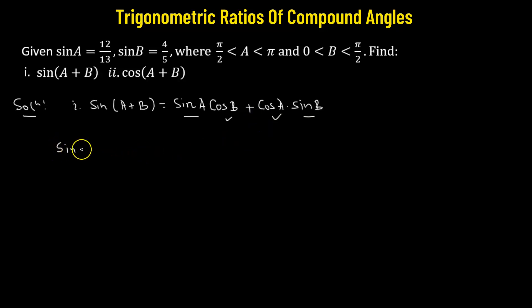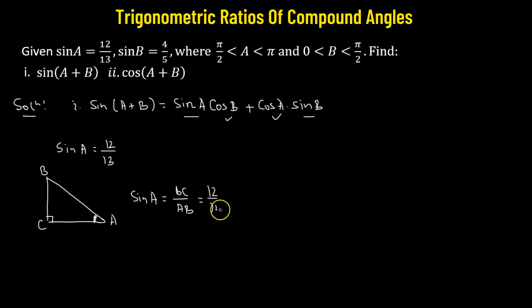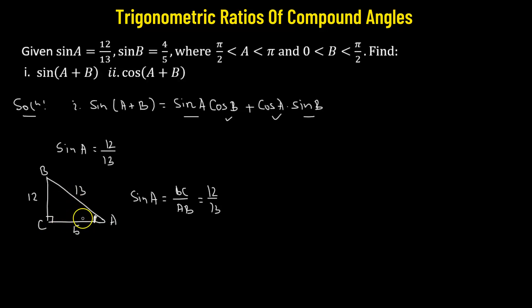We will start with the value of sine a, which is given as 12 over 13. We're going to use a trick here. Consider a right angle triangle with vertices a, b, and c, with the right angle at c. Sine of angle a is defined as the ratio of perpendicular to hypotenuse, so that's bc over ab. Since sine a equals 12 over 13, we can assume bc equals 12 and ab equals 13. The third side ac must then be 5, forming the 5-12-13 Pythagorean triplet.